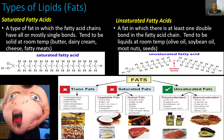Let's start with saturated fatty acids. They are a type of fat in which the fatty acid chains have all or mostly single bonds, and they tend to be solids at room temperature. Some examples include butter, dairy cream, cheese, and fatty meats like steak, pork, and chicken. Looking at a saturated fatty acid, notice these are single-bond carbon chains — each one has a single bond going all the way across.